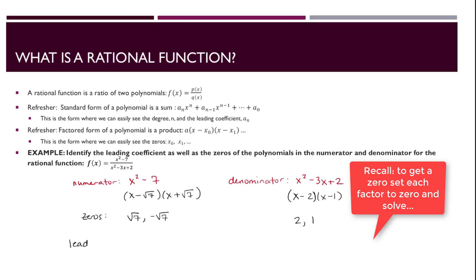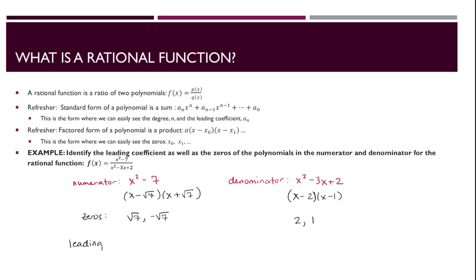Let's take a look at the leading coefficients. Looking at the unfactored form would be the easiest. We see the leading term for the numerator is x squared, so the leading coefficient is 1. For the denominator, the leading term is also x squared, and again the leading coefficient is 1.